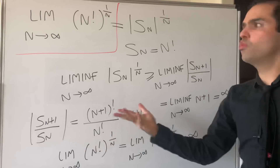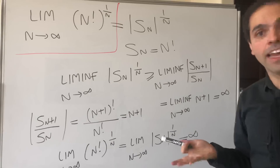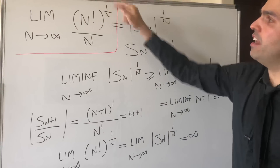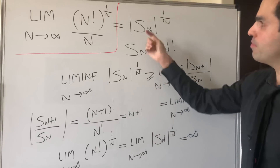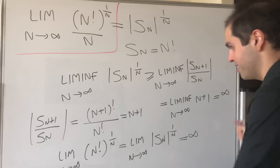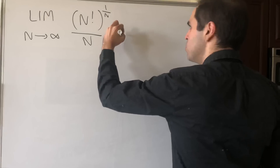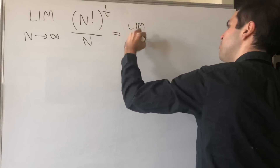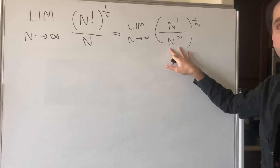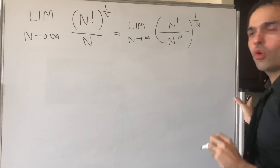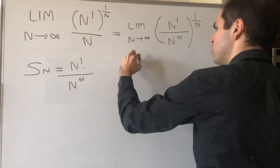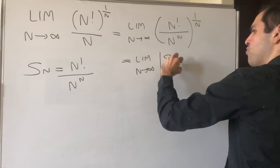Now since this sequence goes to infinity, what if we divide it by n? Let's go back to our original problem and find the limit as n goes to infinity of n factorial to the 1 over n divided by n. Let's write this as an nth root: it just becomes the limit as n goes to infinity of n factorial over n^n, all to the 1 over n. This suggests letting S_n be n factorial over n^n, so this becomes the limit of the nth root of S_n.